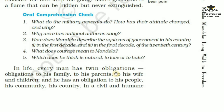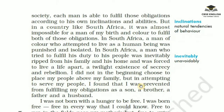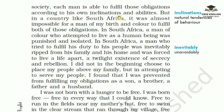In life, every man has twin obligations: obligations to his family — to his parents, his wife and children — and he has an obligation to his people, his community, his country. In a civil and humane society, each man is able to fulfil those obligations according to his own inclinations and abilities. But in a country like South Africa, it was almost impossible for a man of my birth and colour to fulfil both of those obligations. A man of colour who attempted to live as a human being was punished and isolated. A man who tried to fulfil his duty to his people was inevitably ripped from his family and his home, and was forced to live a life apart — a twilight existence of secrecy and rebellion.